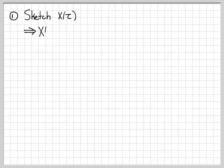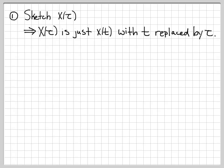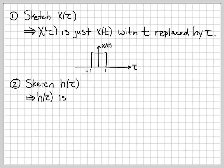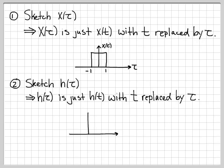Step 1: sketch x(τ). x(τ) is just x(t) with t replaced by τ — so it's trivial. If we already know what x(t) looks like, sketching x(τ) is simply replacing t with τ. Step 2: sketch h(τ). Similarly, h(τ) is just h(t) with t replaced by τ. If we know what h(t) is, we can easily sketch h(τ). These first two steps are very straightforward.